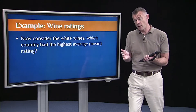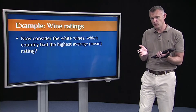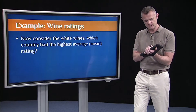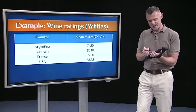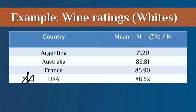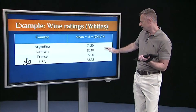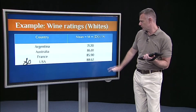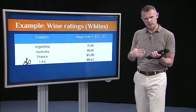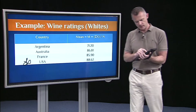Now let's consider the white wines. Which country won with respect to the whites? Again, this was totally random. I didn't bias this, even though I had a favorite in the race — and that favorite won. So the U.S., the Rieslings from upstate New York — the cameraman's waving yay. Again, this was not biased, this was totally random. It just slightly beat out Australia and France for the overall average ranking.